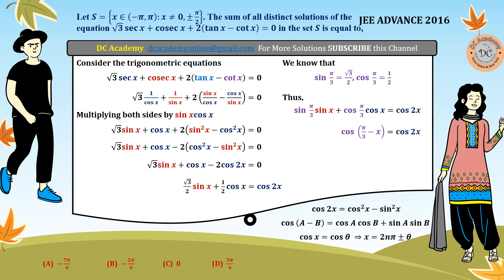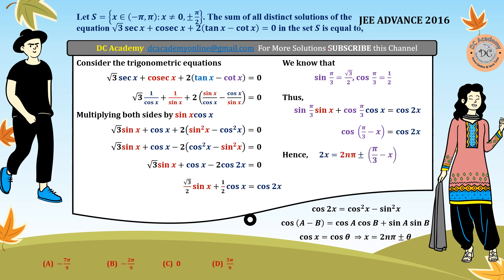Now we have cos(pi by 3 minus x) equals cos(2x). We know that if cos x equals cos theta, then x equals 2nπ plus or minus theta. Therefore, we can get the solution of this equation as pi by 3 minus x equals 2nπ plus or minus 2x. Our aim is to calculate x, so we rewrite this as 2x equals 2nπ plus or minus (pi by 3 minus x), and we can simplify to find the value of x.